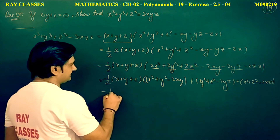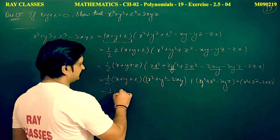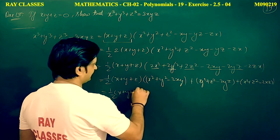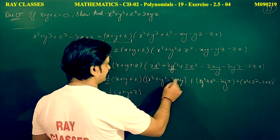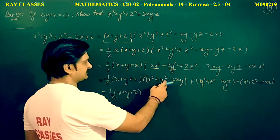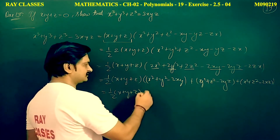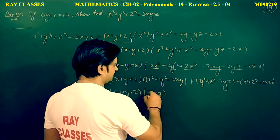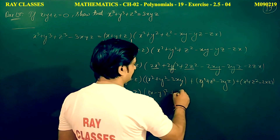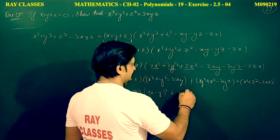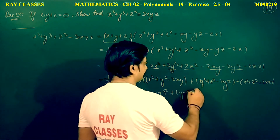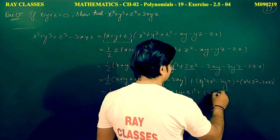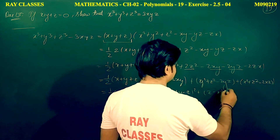This gives us: 1/2 times (x plus y plus z) multiplied by (x minus y) whole square plus (y minus z) whole square plus (z minus x) whole square. This completes the proof.